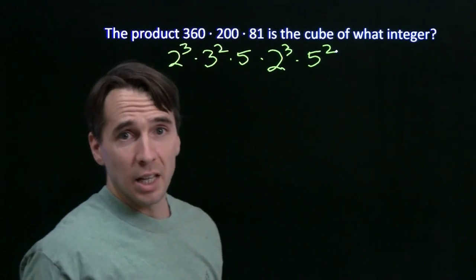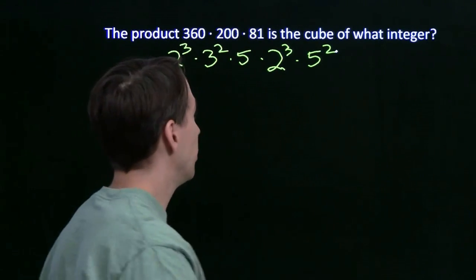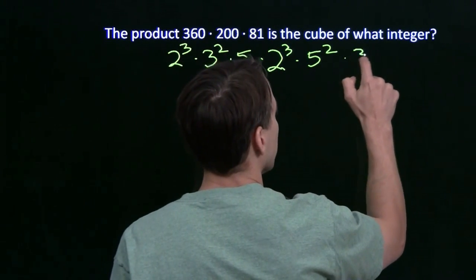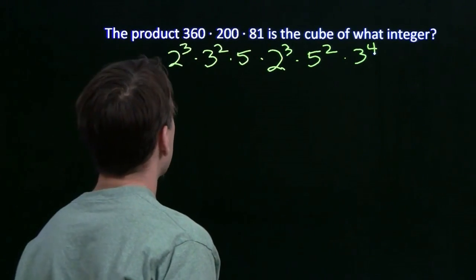And 81, 81 is just 9 times 9, 9 is 3 squared. 3 squared times 3 squared, that is 3 to the fourth.